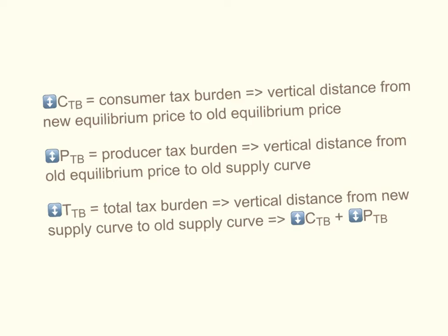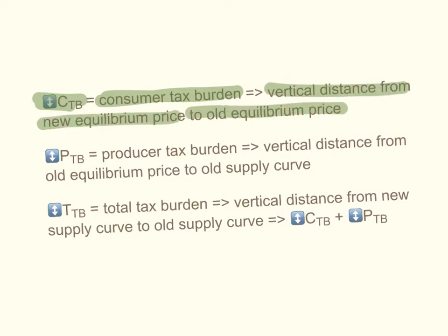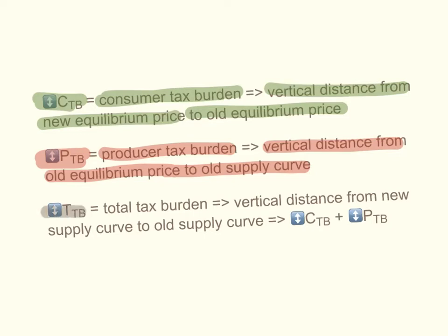Before introducing the diagrams, here are some labels I will use to explain and analyze them. CTB refers to the consumer tax burden — it is the vertical distance from the new equilibrium price to the old equilibrium price. PTB refers to the producer tax burden — the vertical distance from the old equilibrium price down to the old supply curve. TTB is the total tax burden — the vertical distance from the new supply curve all the way down to the old supply curve. The total tax burden is the sum of the consumer and producer tax burdens: TTB = CTB + PTB.